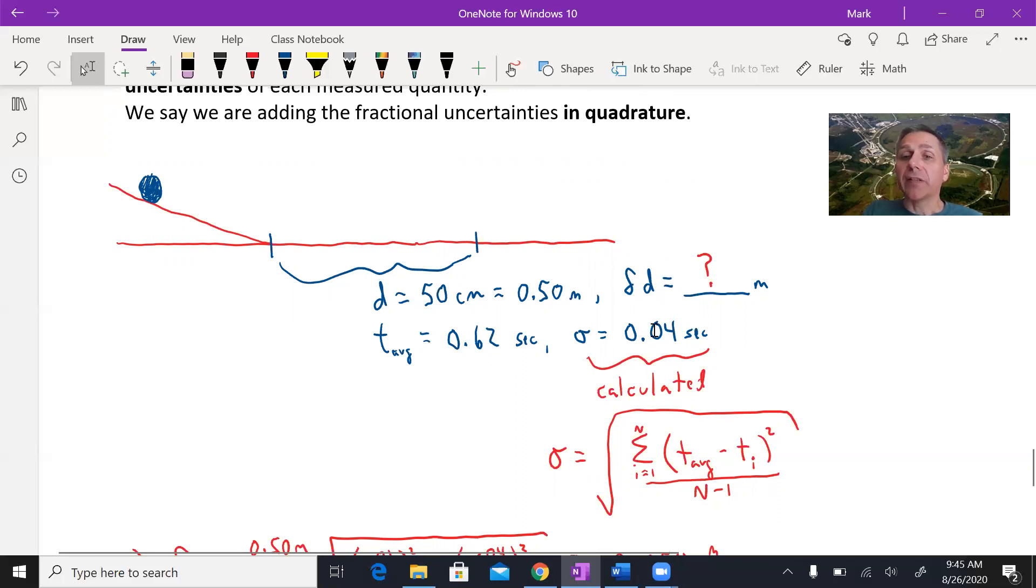Let's say you do some number of time trials, and the average time is 0.62 seconds. We would calculate the standard deviation for time trials. This is our definition for standard deviation here. Just kind of plug and chug to get this number out. Let's say it turns out to be 0.04 seconds.